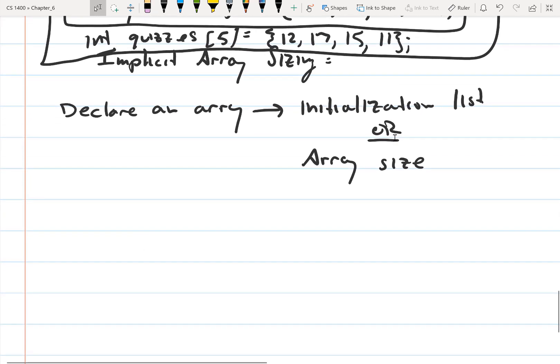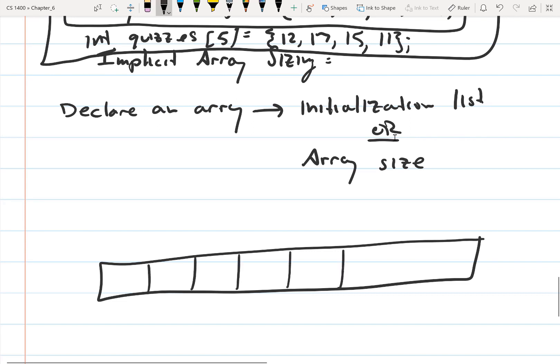C++ doesn't check your array to see if you go off the end. Let's say this is our memory. So we have these memory locations.